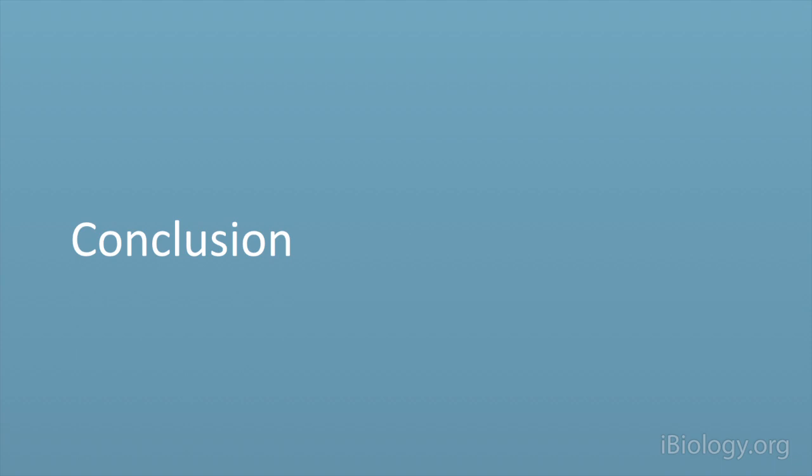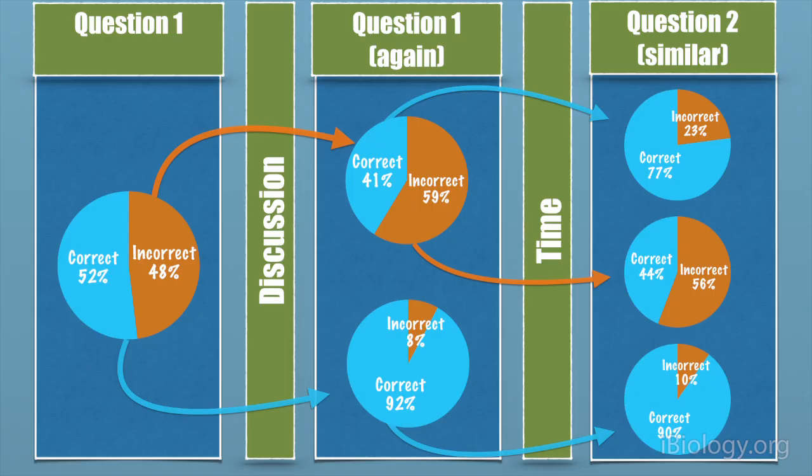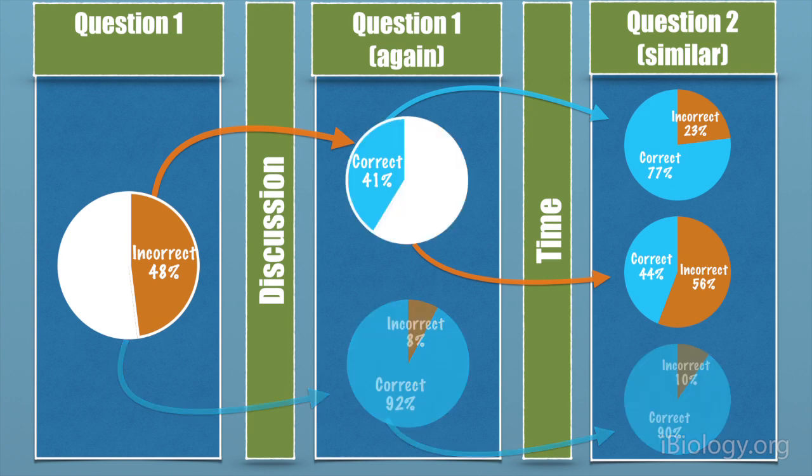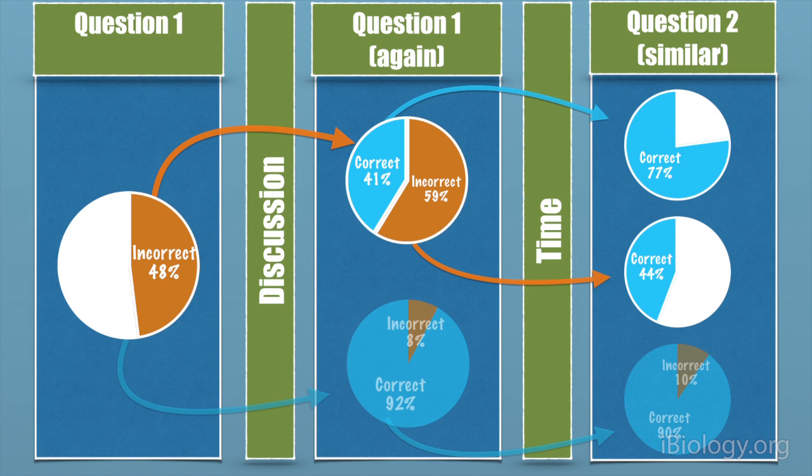What they found was evidence that seemed to clearly indicate that students were in fact increasing their understanding through the discussion process. Because if you take the people who got it wrong the first time and then changed their vote and got it right after the discussion, they do much better on the subsequent isomorphic question than the students who did not change their mind after the discussion.